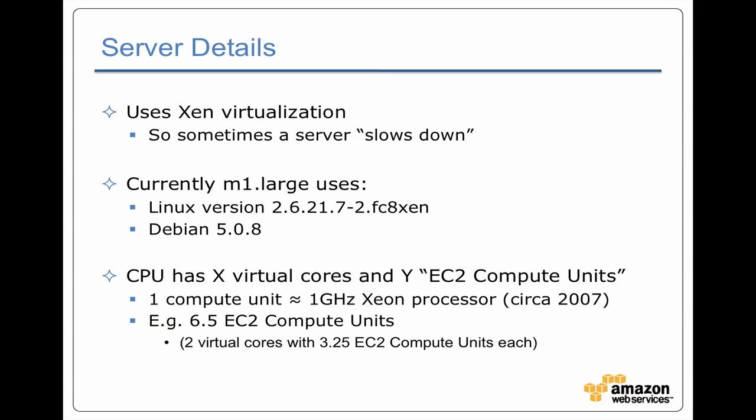If we take a look at a typical instance like M1 large, it's running a Debian distribution on top of Linux. Every one of these servers has some number of virtual cores. You also see things described in terms of EC2 compute units, which is how Amazon tries to give you some idea of the relative performance of these different types of servers. One compute unit is about the same as a single Xeon processor running at one gigahertz. So if you have a virtual server with two cores and each core has 3.25 EC2 compute units, you wind up with 6.5 compute units.